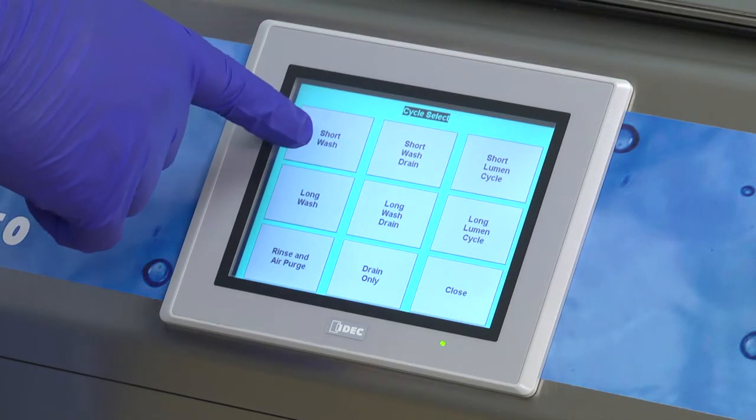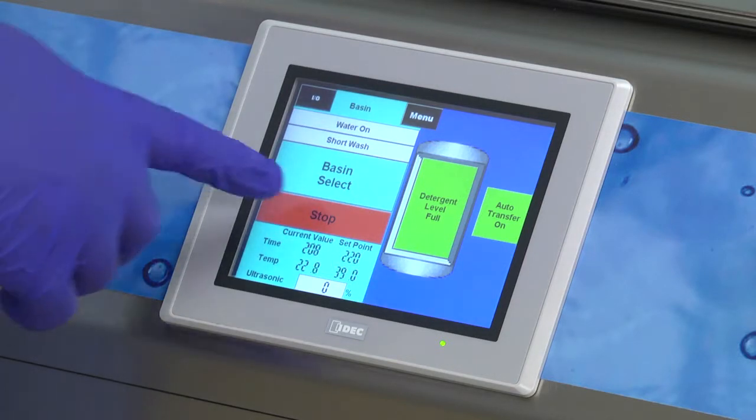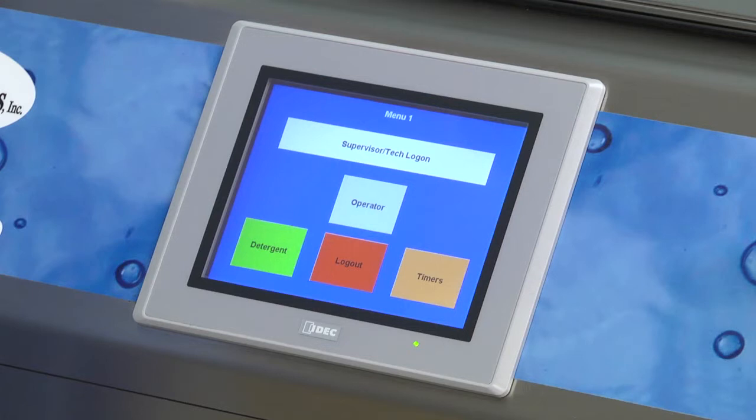Once you begin a cycle, a countdown timer updates you on the amount of time left in a cycle. If you need to abort a cycle for any reason, simply press the Stop button. Operators should log out of the system after their cycle has finished running. To do this, simply press Log Out from Menu 1.